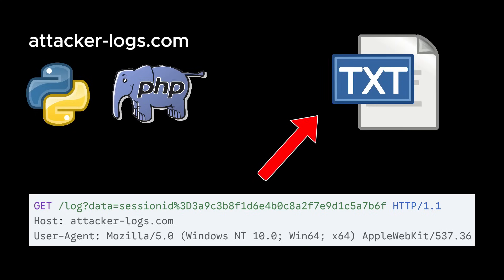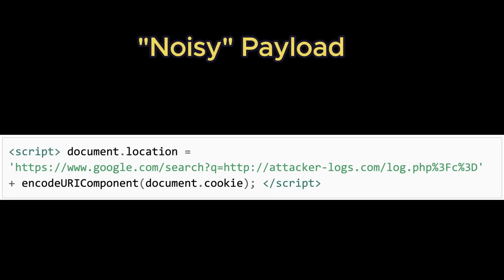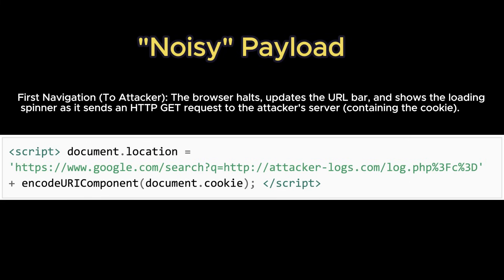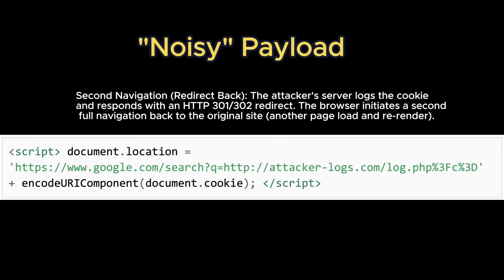There are two possible payloads. The first is the noisy payload, or page redirect. This is the classic method: it uses encodeURIComponent to ensure that special characters within the cookie value, like semicolons, equals signs, or spaces, are properly URL-encoded so they don't break the attacker's query string. This payload works by triggering a full browser navigation. The victim's browser will briefly flicker, the network spinner will spin, and the browser history will record a redirect to the attacker's site before likely being redirected back. An observant user or admin might notice the anomaly — this is why it's noisy.